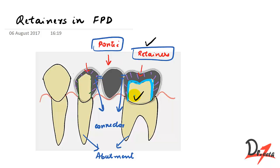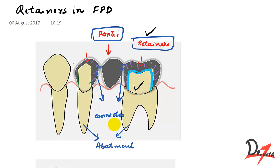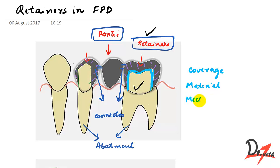Classification of retainers is done on the basis of three things: coverage, material, and mechanism. These three are the ways by which we classify retainers.